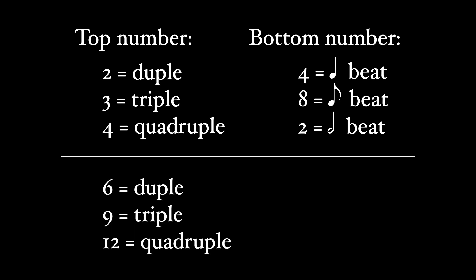Time signatures with six, nine, or twelve on top have one-third that many beats per measure. So six means duple meter, nine means triple meter, twelve means quadruple meter. And the bottom number of the time signature tells you the beat division value. So to get the beat value, you have to go up one note value and dot it. So if you see eight on the bottom, you go up one note value from eighth note to quarter note and then dot it. So eight means a dotted quarter note beat. Four means a dotted half note beat, and sixteen means a dotted eighth note beat.